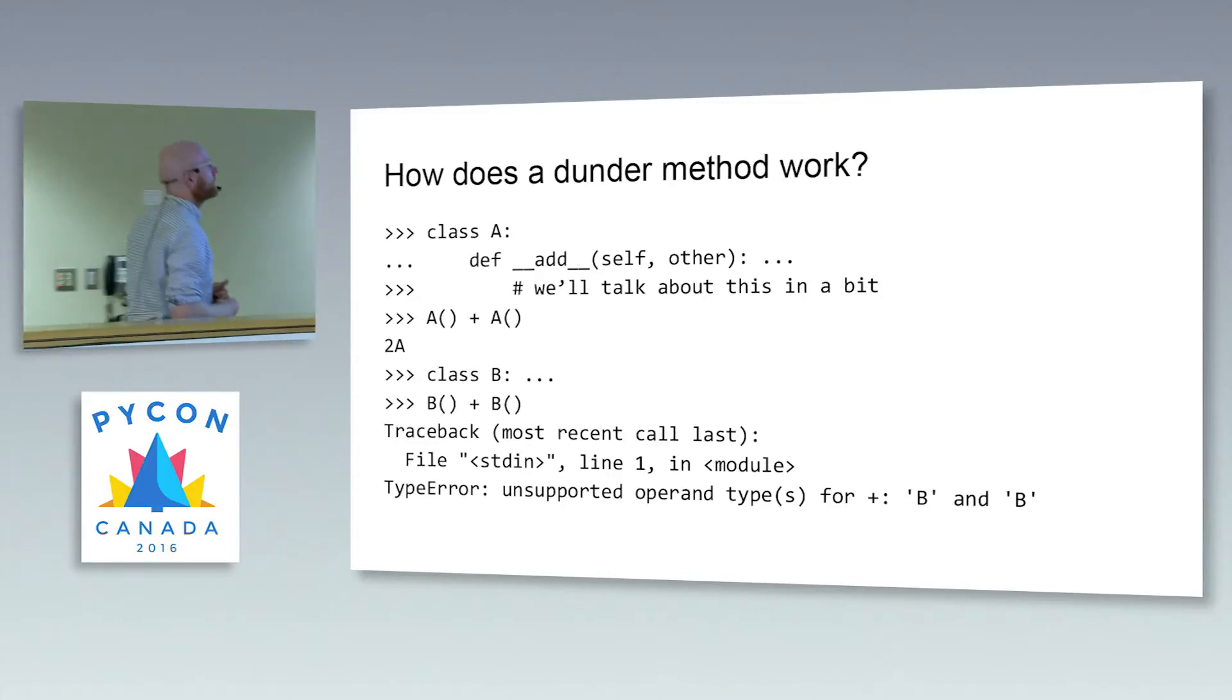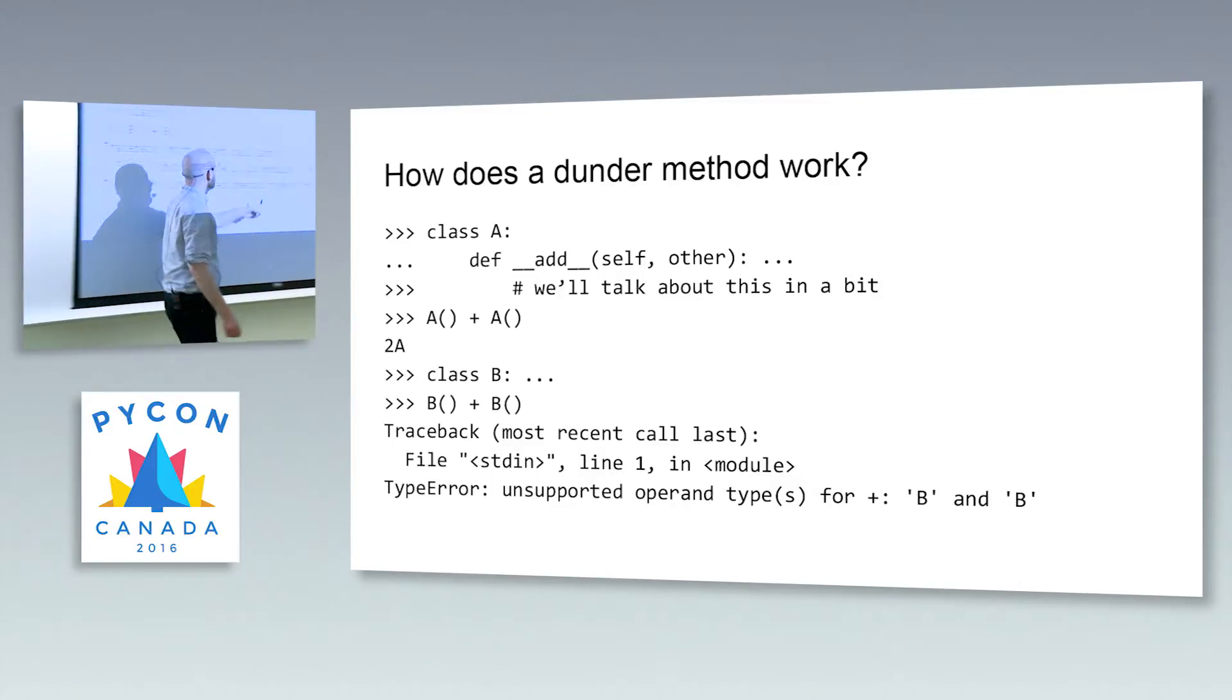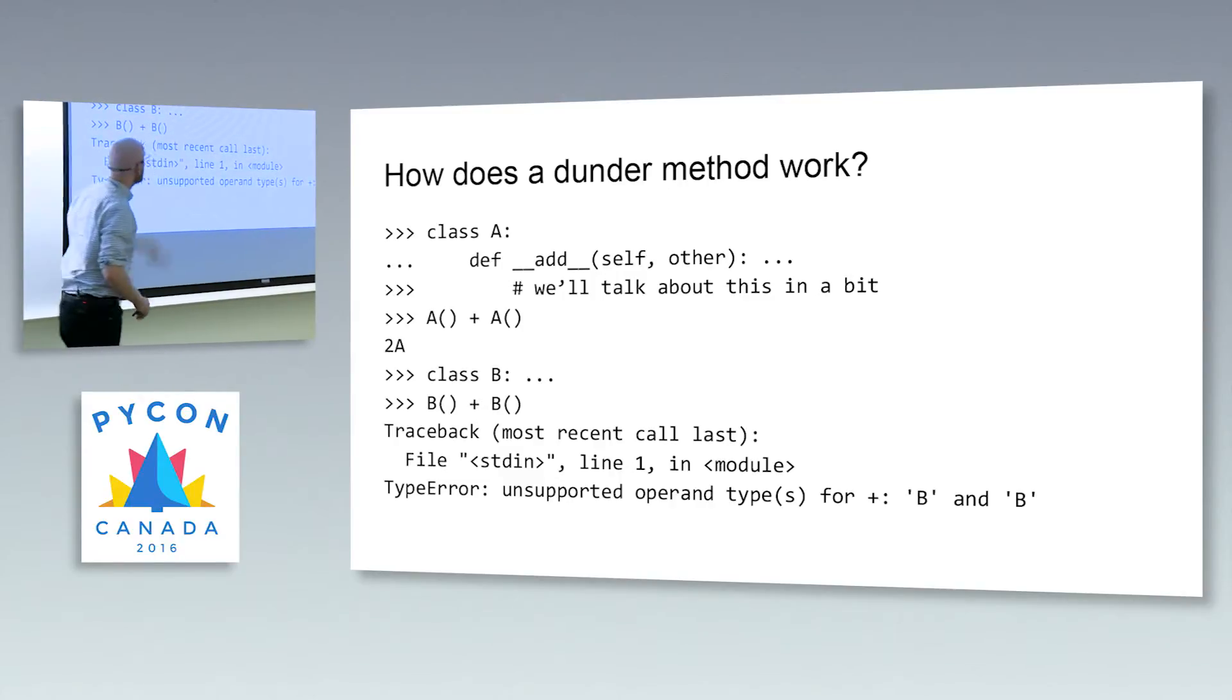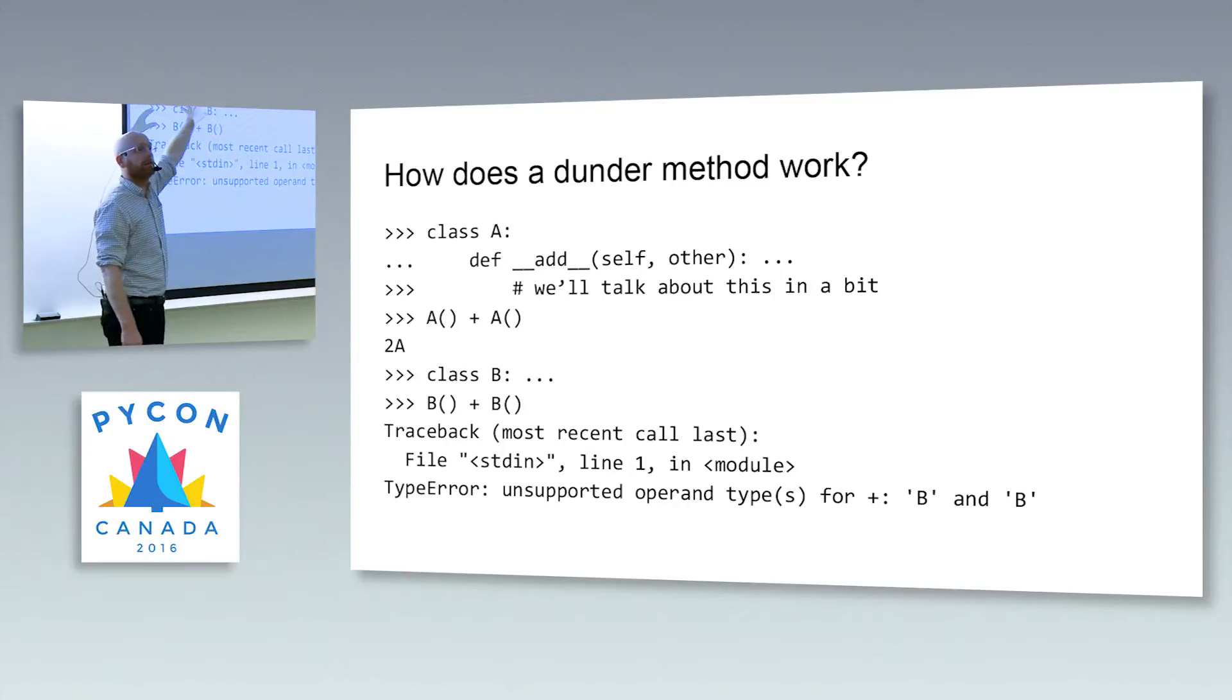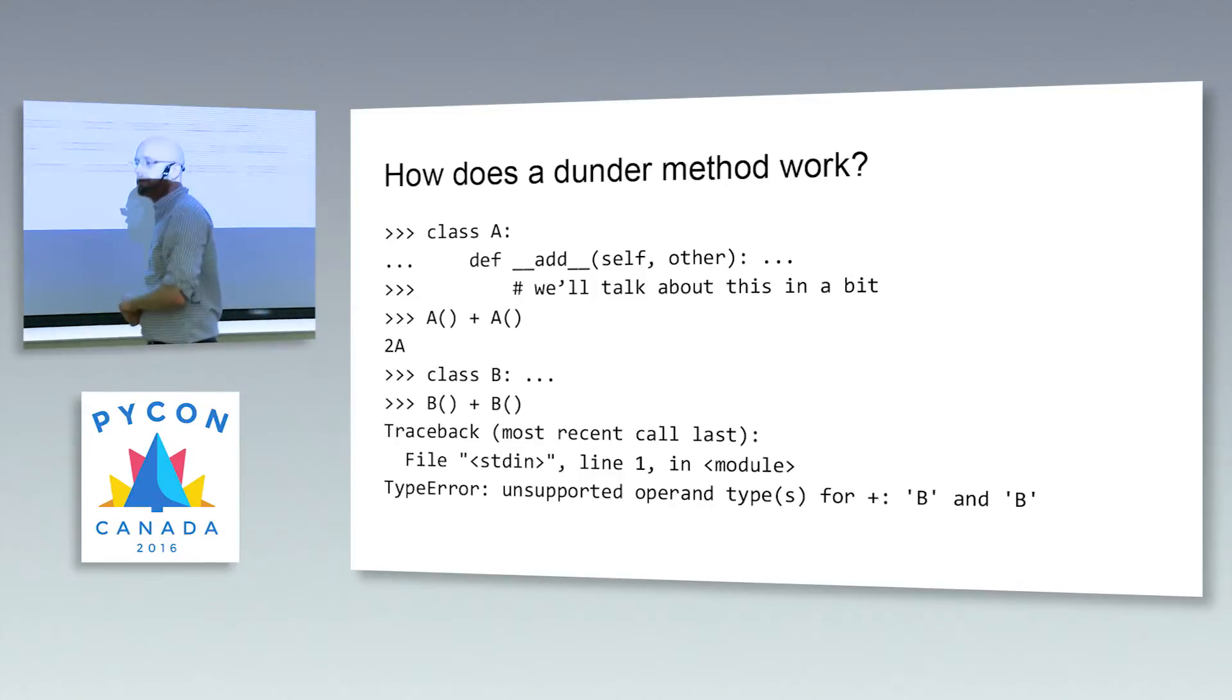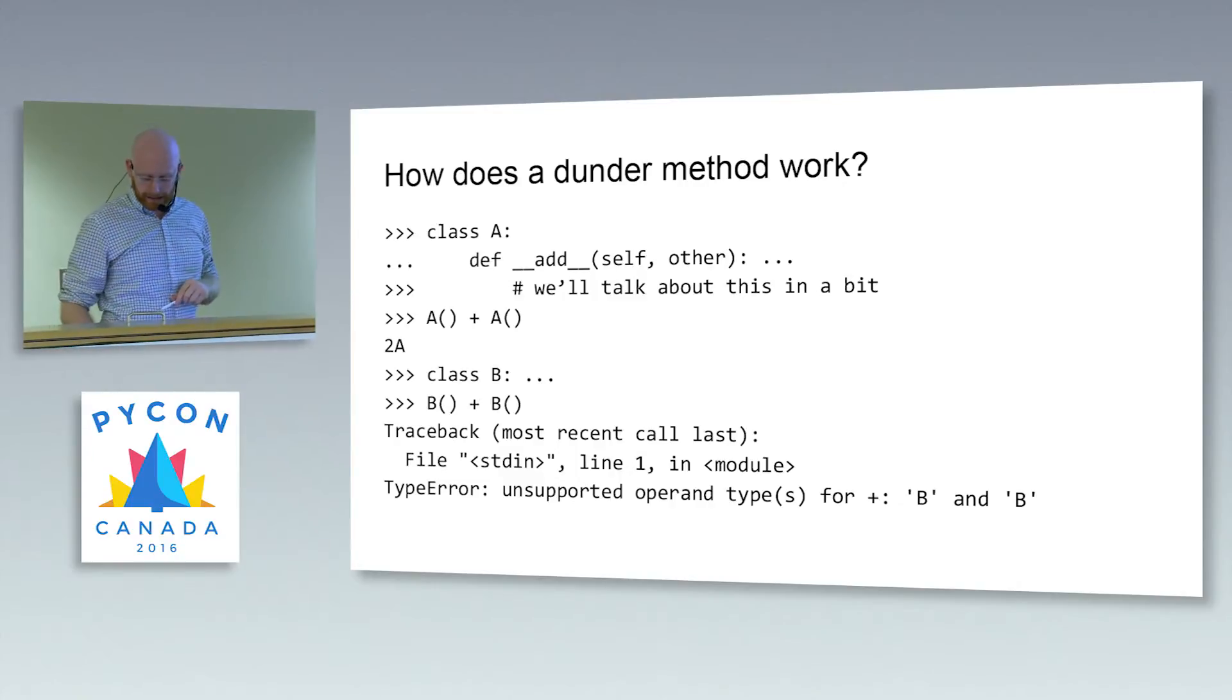So what happens if we don't define that def statement? Well, we get back this unsupported operand type, right? Here in this class A, we're going to go ahead and define this dunder add method. I just want to show you that if we define dunder add, great, now we can add two instances of the class together. If we don't, we kind of fall back on the default behavior for the class, which is just saying Python says I don't know how to handle that. You need to tell me.